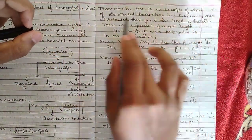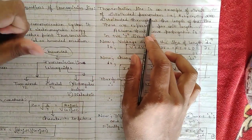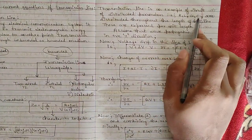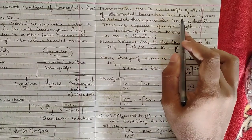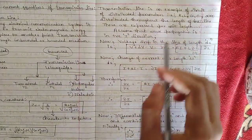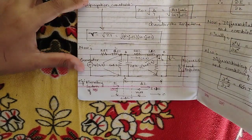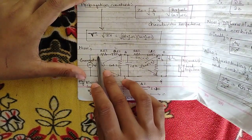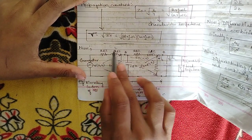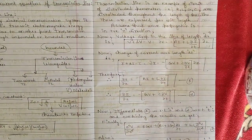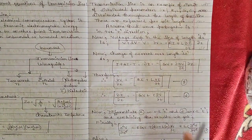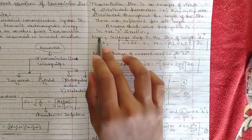A transmission line is an example of a circuit with distributed parameters. The parameters distributed along the line are R, L, G, and C — resistance, inductance, susceptance, and capacitance — present throughout the entire length of the line. These are expressed per unit length. We assume the wave propagation is in the positive z direction.